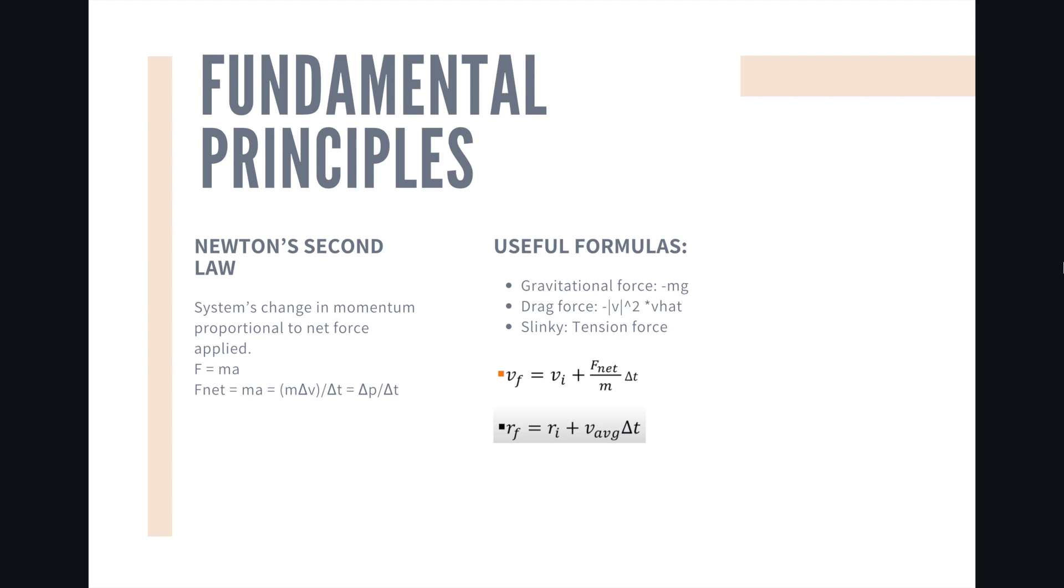There are some fundamental principles that we need to know for this lab. We need to know Newton's second law which is the system's change in momentum proportional to net force applied, F equals ma. Some useful formulas are the gravitational force that is negative mass times gravity, it goes in the negative y direction, the drag force, and the slinky which will have a tension force. We will also need to know the velocity update formula as well as the position update formula.